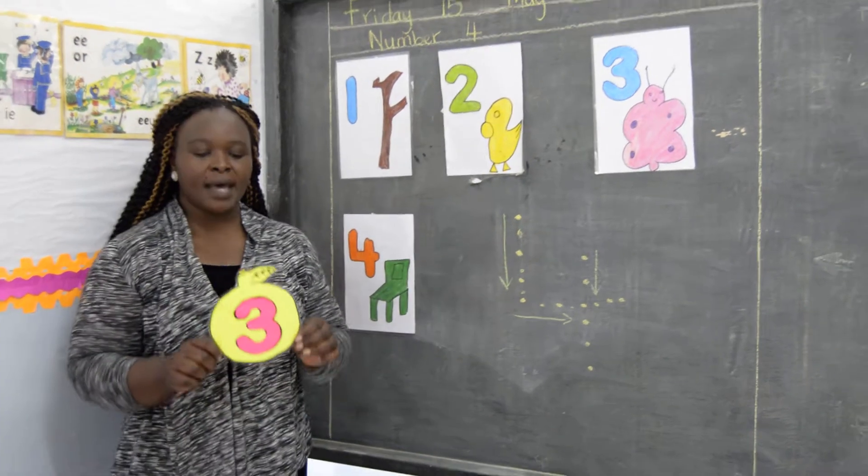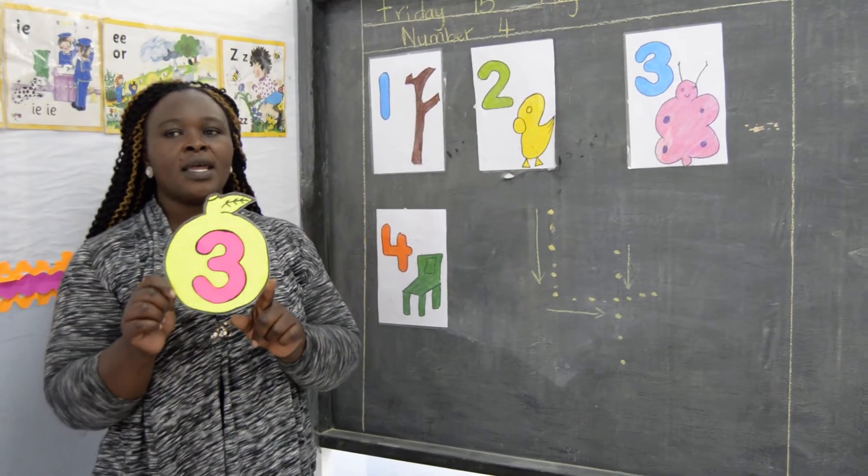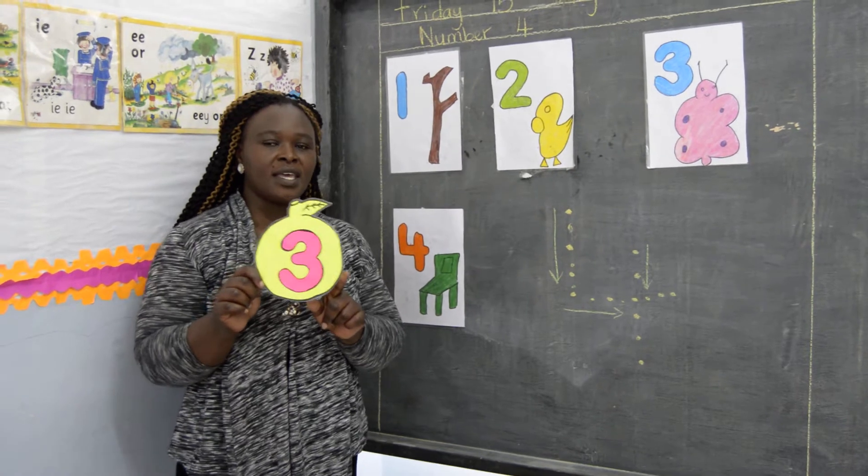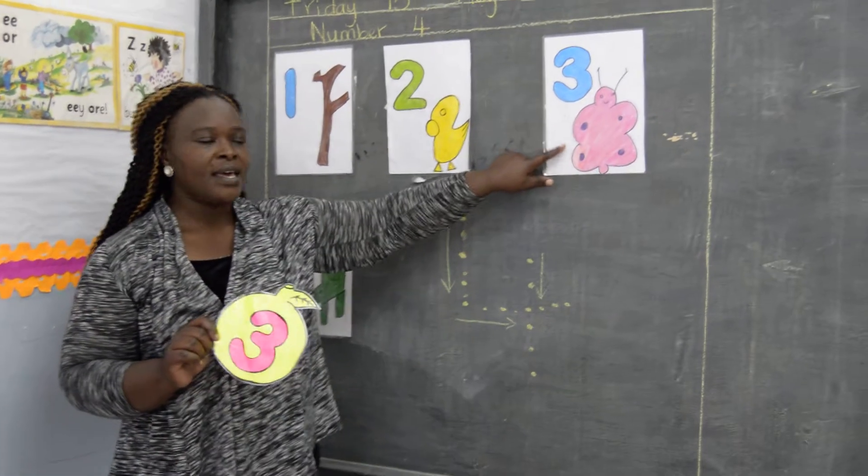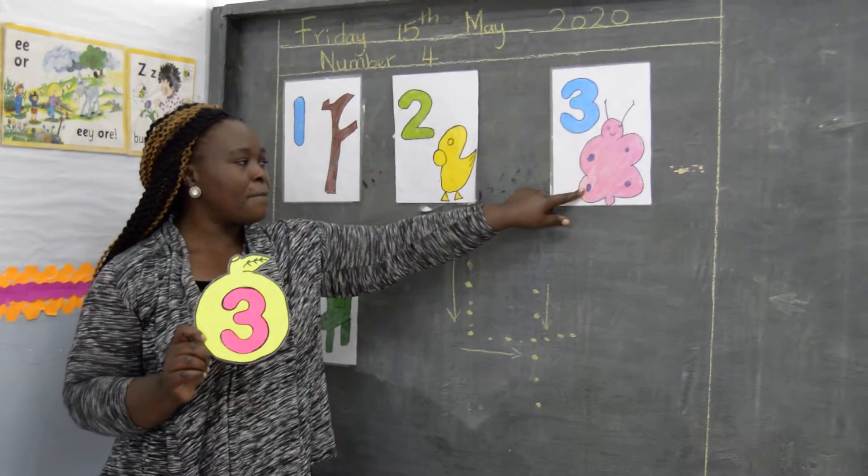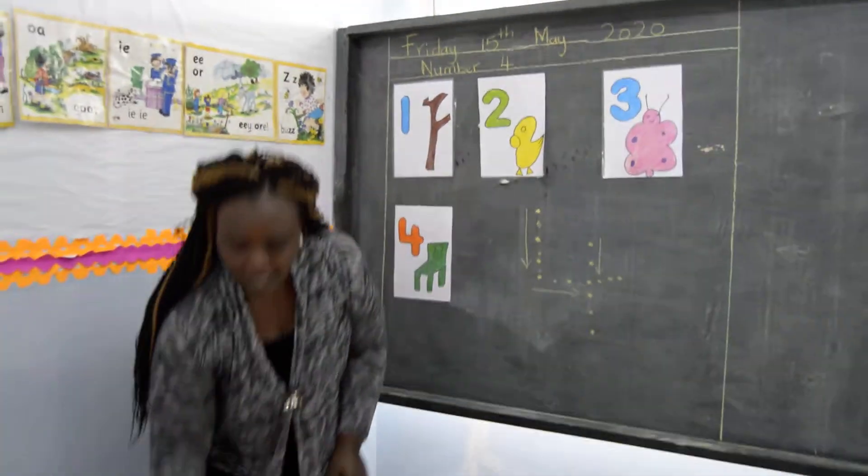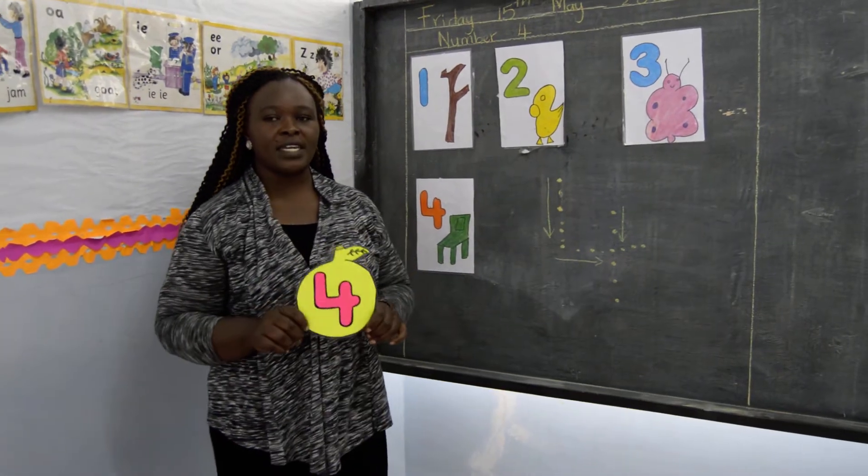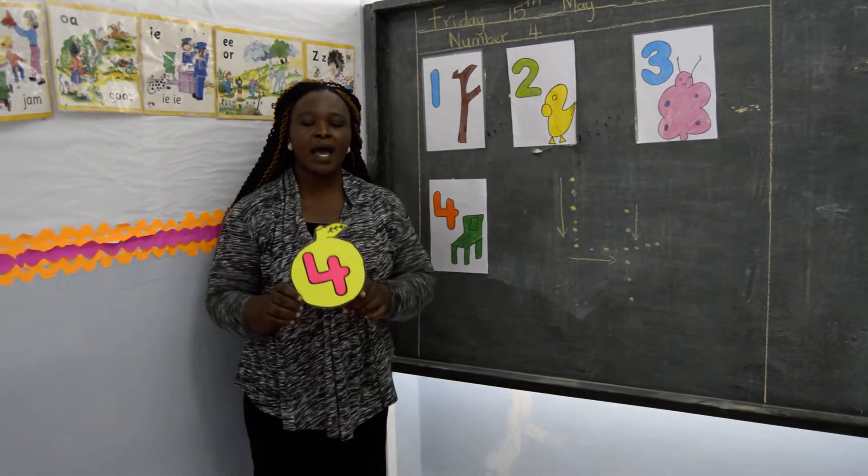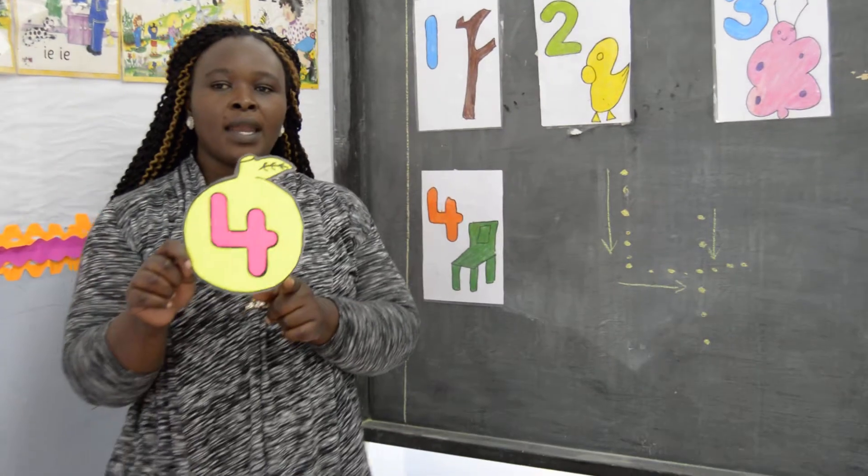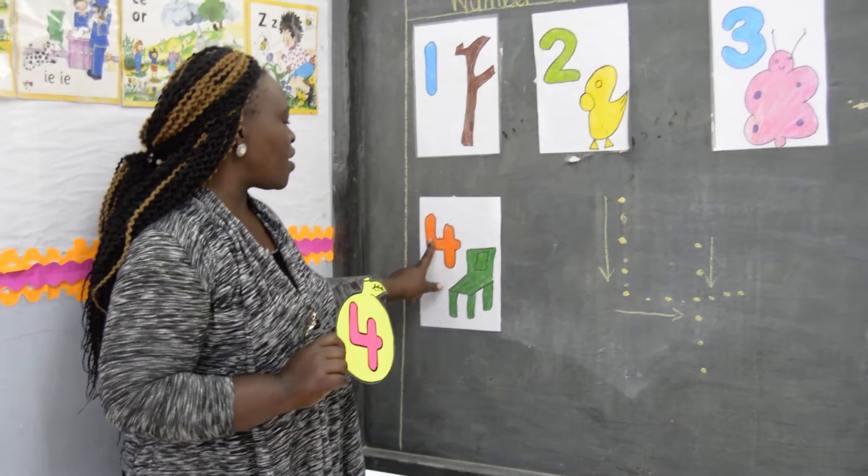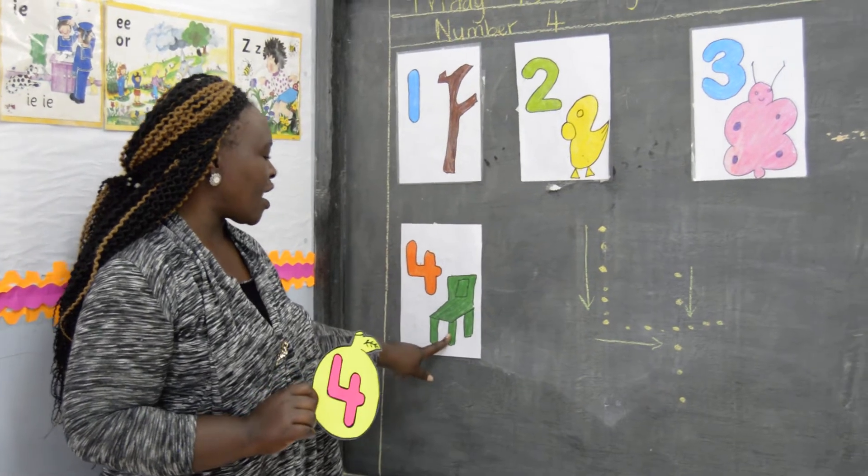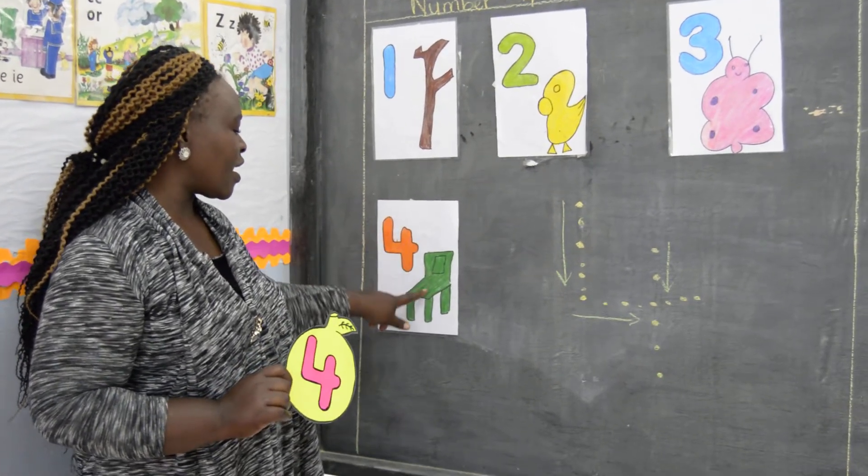Number three. Number three. Three like a butterfly. Three like a butterfly. And our number of the day. Number four. Number four. Four like a chair. Four like a chair.